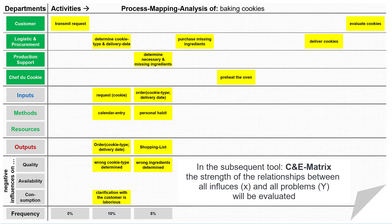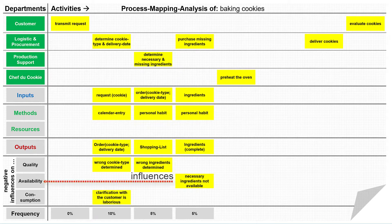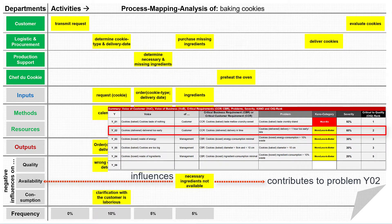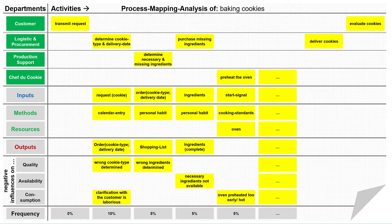In the C and E matrix we will later evaluate the strength of this relationship. In the fourth activity, purchase missing ingredients, the negative influence — necessary ingredients not available — occurred in about 5% of cases, and there is probably a relationship to the second problem: cookies delivered too early or too late. In the fifth activity, the oven is preheated too early and/or too hot in 5% of cases, which affects energy consumption and thus our third problem. I continue for all remaining activities, collecting the negative influences and frequencies up to the delivery of the cookies and their evaluation by the customer.